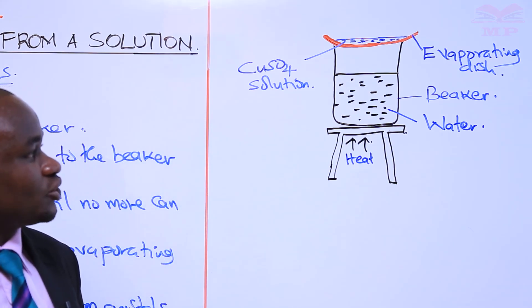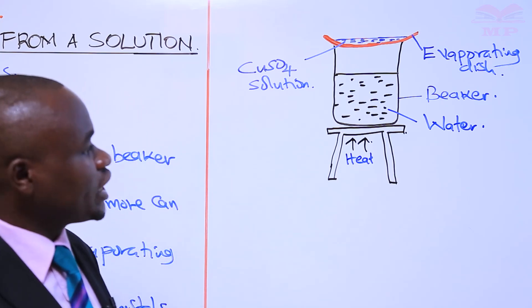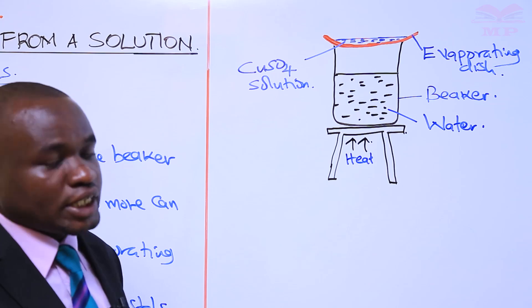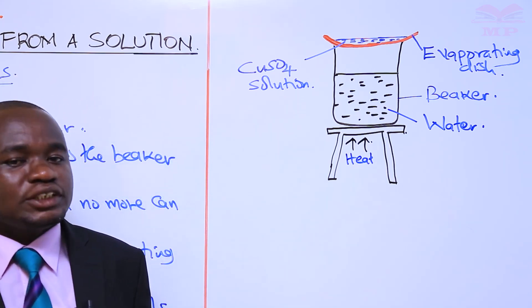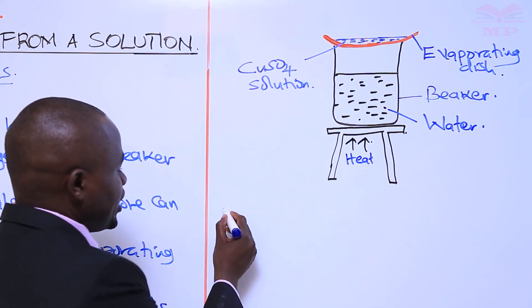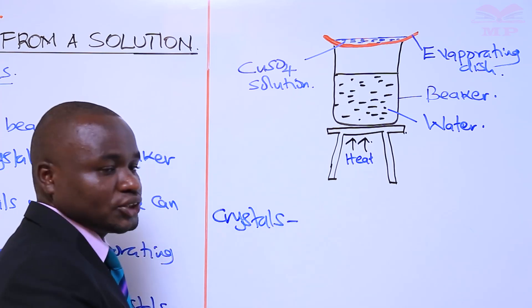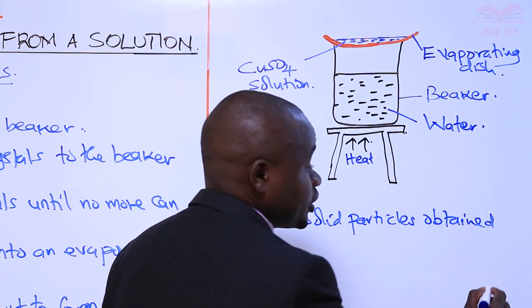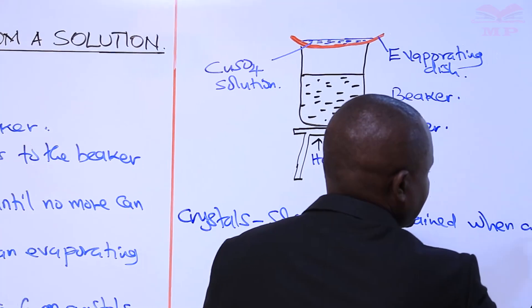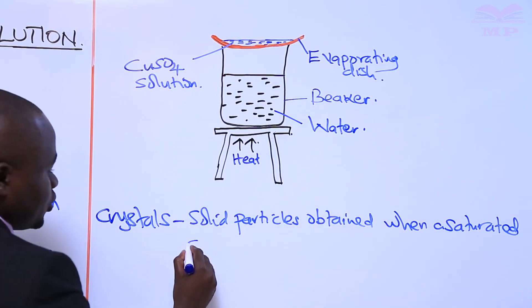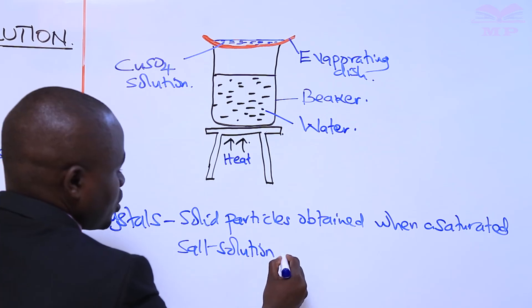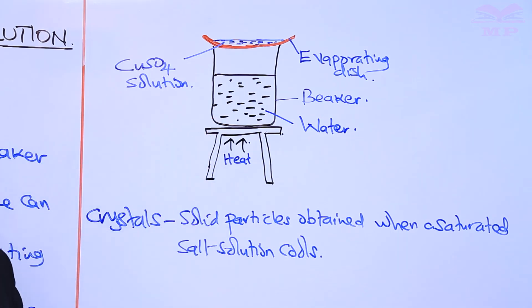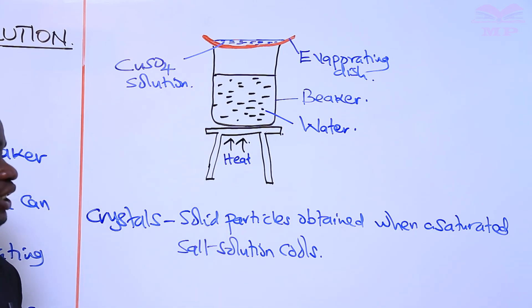After cooling, the solution will form crystals — the crystals of copper sulfate. It's good you also know the definition of the word crystals. Crystals can be defined as the solid particles obtained when a saturated salt solution cools. After copper sulfate solution cools, it will form copper sulfate crystals. We also have the term saturated solution, so let's define it.